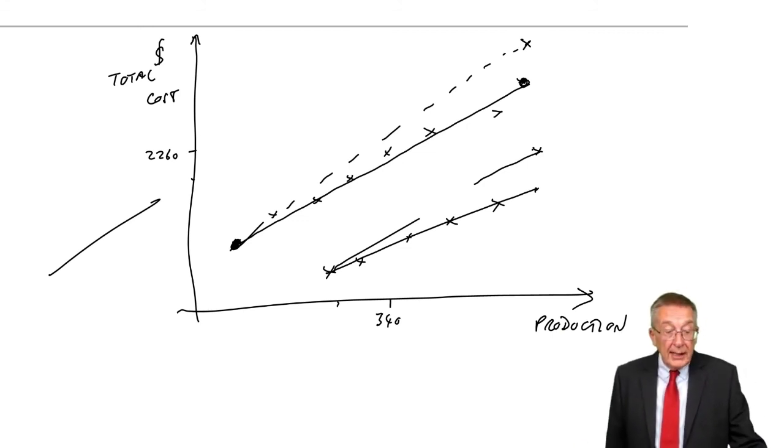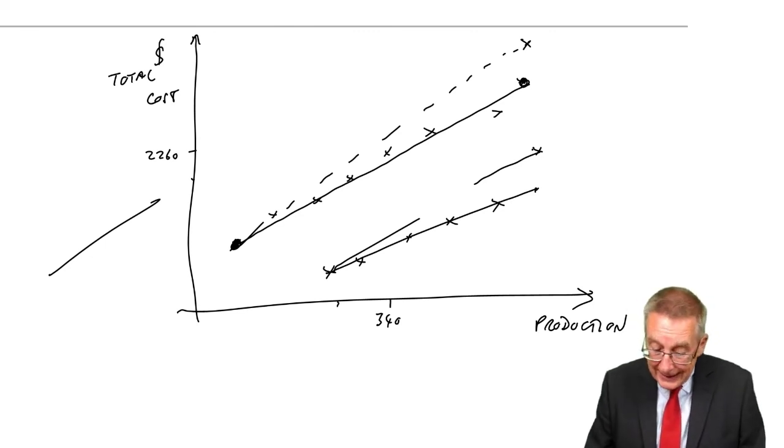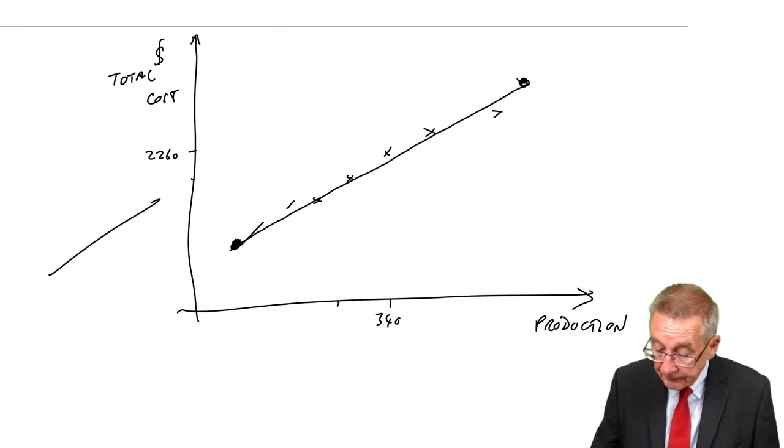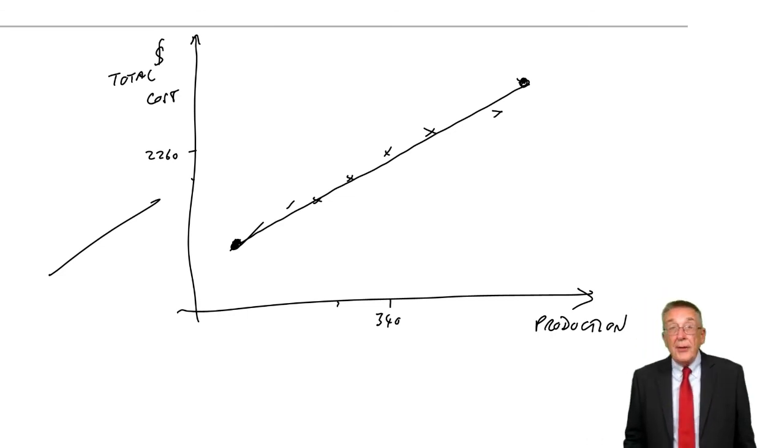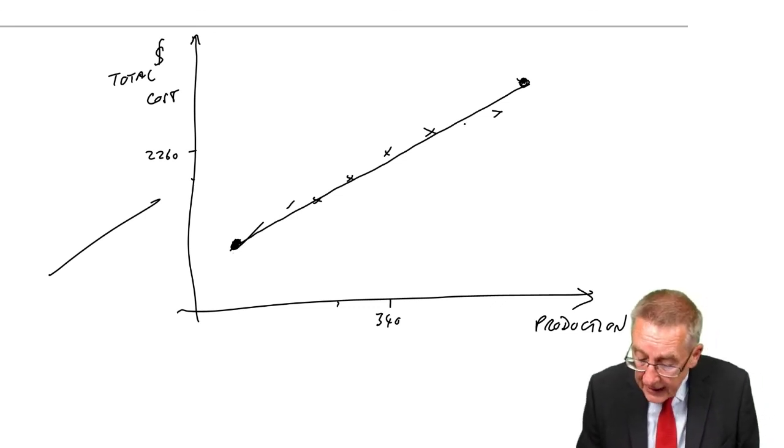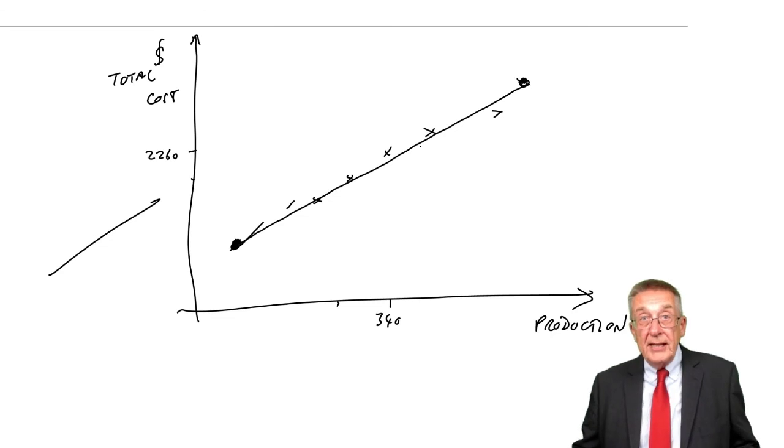And that's why a much better approach, even though a lot messier, is something called regression analysis. And what regression does, you get some formulae and all you need is to be able to use the formulae as I'll show you. But rather than just look at the highest and lowest, effectively what it does is it finds the line that most nearly goes through all of the observations.